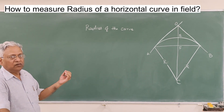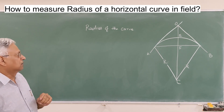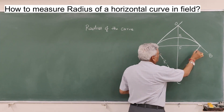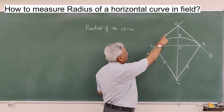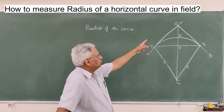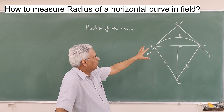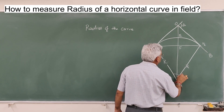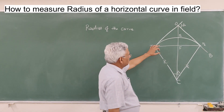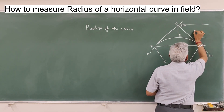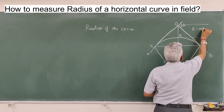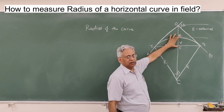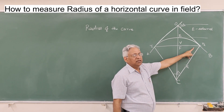Before we go into details of radius of the curve, let us understand what are the elements of the circular curve. This is the circular curve. T1 and T2 are two tangent points and they meet at O. So T1-O and T2-O are two tangents drawn on a circular curve. This is the deflection angle. This will be the same as this deflection angle. This is what we call the external distance E, and this is called the versine, EF. T1-T2 is the chord of the circular curve.